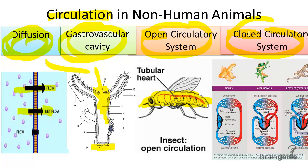In closed circulatory systems, however, blood flows in vessels known as veins, arteries, and capillaries. Annelids, or earthworms, for example, have a closed circulatory system which allows for blood to flow through a circuit of tubes.